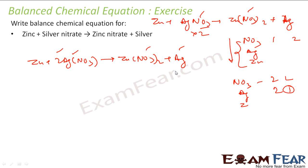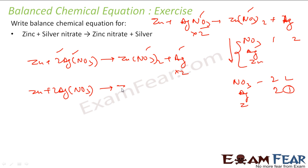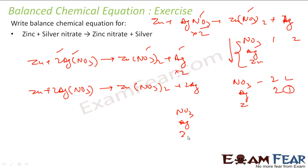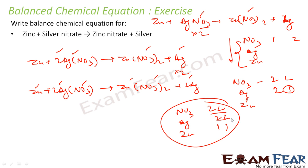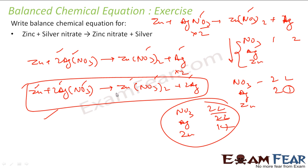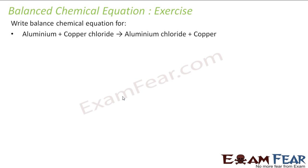Silver we have 2 here and 1 here, so it is not balanced — let us multiply by 2. What you get is Zn plus 2AgNO₃ gives Zn(NO₃)₂ plus 2Ag. Let us check the count: nitrate is 2 here and 2 here — balanced. Silver is 2 here and 2 here — balanced. Zinc is 1 here and 1 here — balanced. This is my balanced chemical equation.